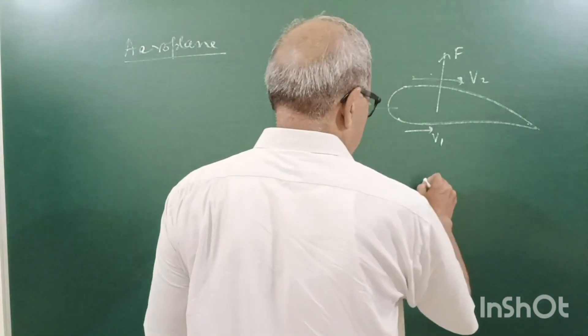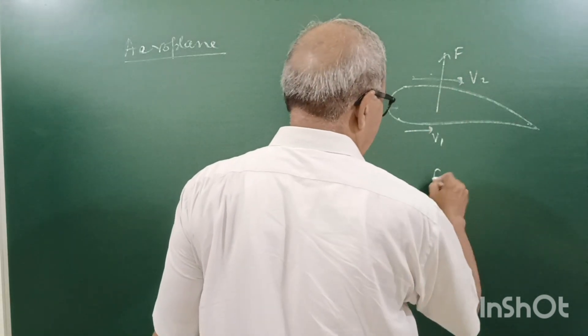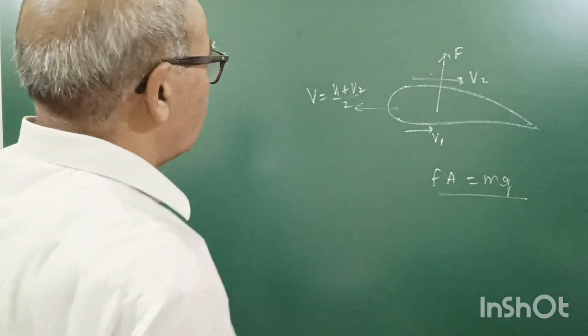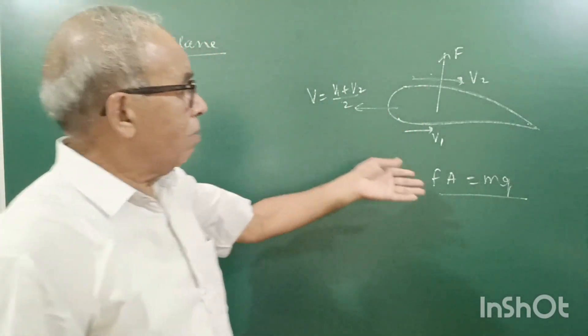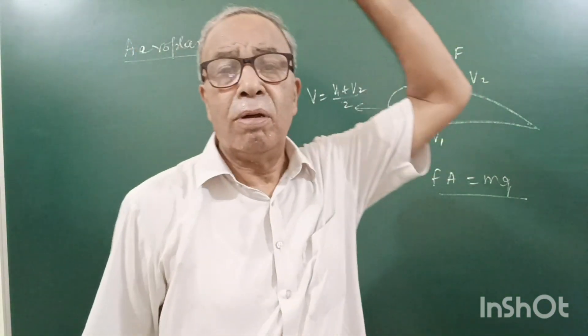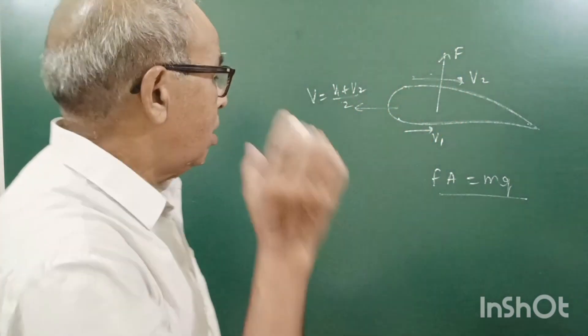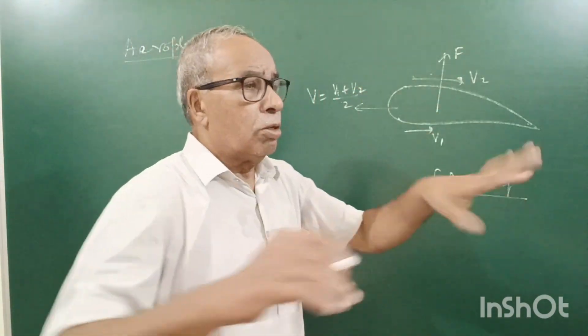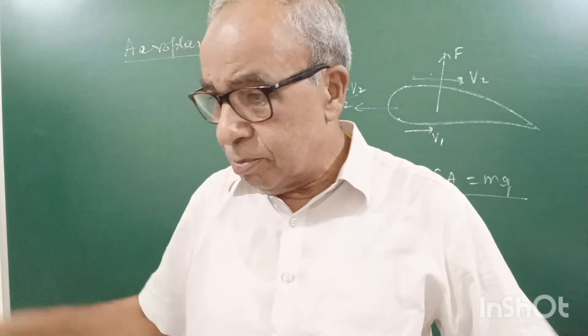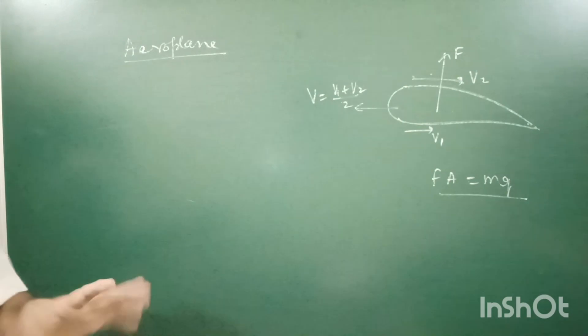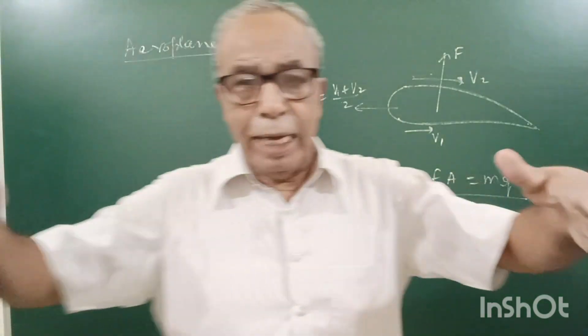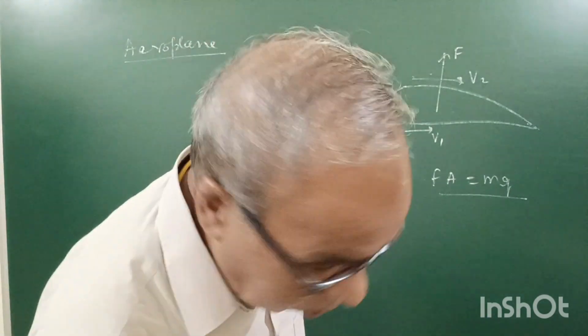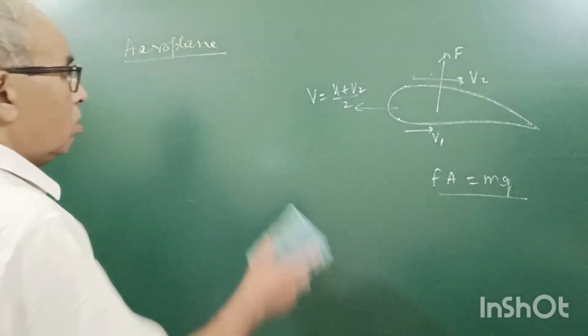So if the force, if A is the area, F times A equal to Mg. And when you balance here, it will continue to fly horizontally. If air force becomes more than Mg, it will rise up. When you want to come to the ground, then you decrease it. Those wings actually have many things there. They keep on moving like this also. So, by changing the direction of wing, we change the velocity. This is one application of Bernoulli's theorem.